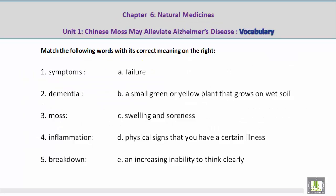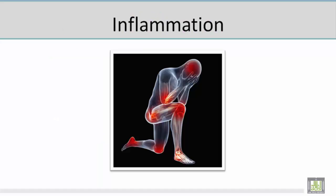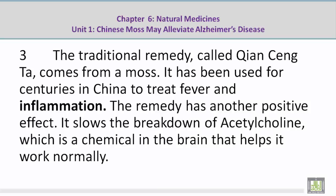Number 4: Inflammation. Mohamed, please give us the correct meaning on the right. C — Swelling and soreness. Now let's take a look at a picture related to the vocabulary word 'inflammation.' Mohamed, can you talk about this? I see red signs or red color, and it's swelling and soreness — his knees, head, his bones in general. That is what inflammation is: swelling and soreness. Now let's take a look at a paragraph: It has been used for centuries in China to treat fever and inflammation.